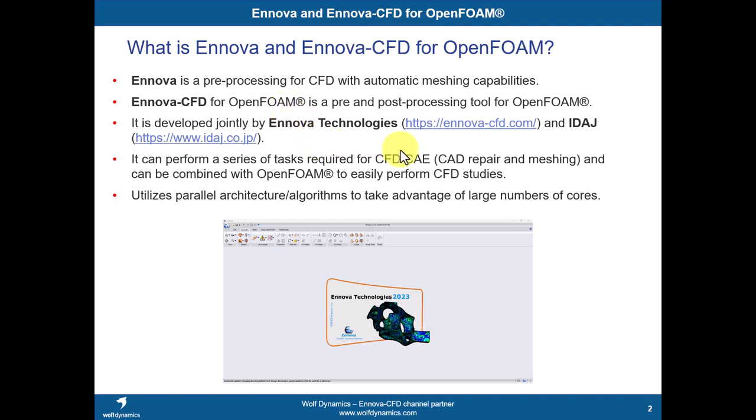Innova is developed by Innova CFD Technology. You have links to visit their site and also IDAT in Japan. Importantly, it's fully parametric and can perform all your pre-processing tasks — repairing geometry, doing the meshing, and to some extent post-processing. It runs in parallel and can be deployed in the cloud, so it's not a single-processor tool. You can get very large meshes in relatively affordable times.